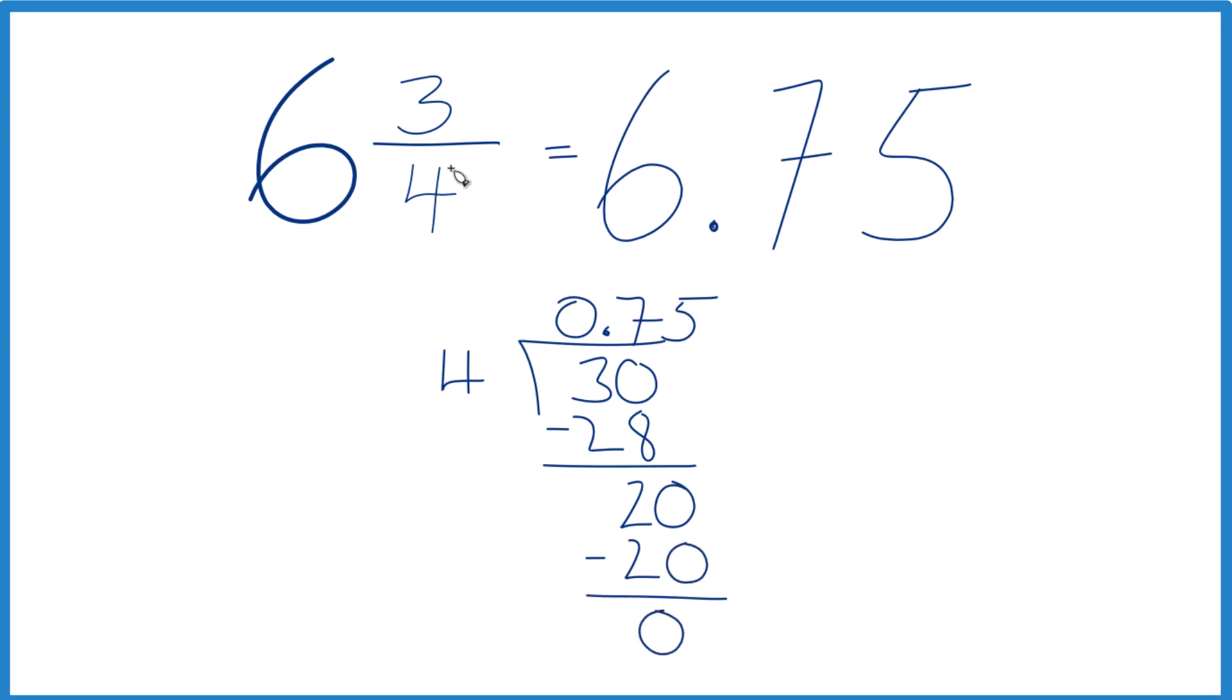So the fraction three-fourths equals a decimal zero point seven five, or you could call it point seven five. Six plus point seven five gives us six point seven five. So in answer to our question, the fraction six and three-fourths equals a decimal six point seven five.